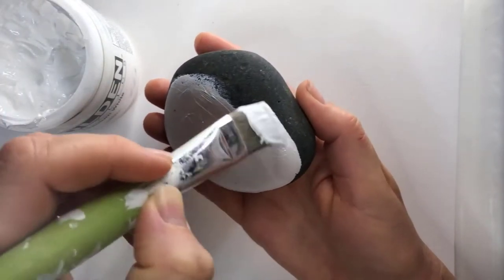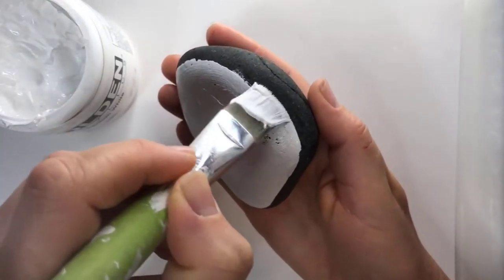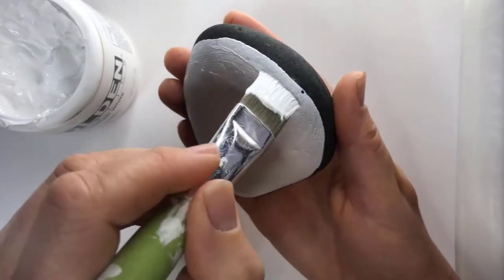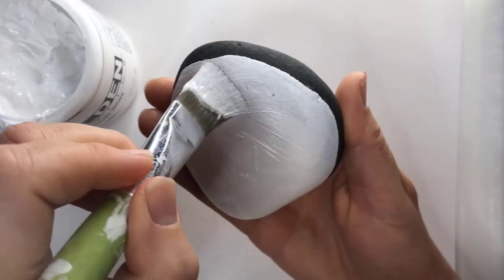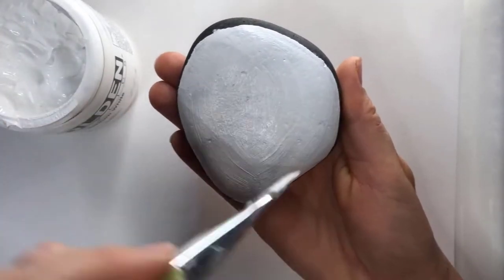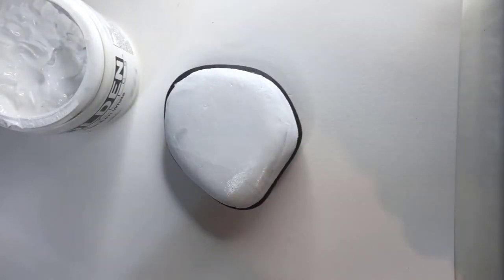Before you start applying your base coat, make sure your rock isn't hot from sitting in the sun to dry, as this makes the paint dry too quickly and will limit the amount of time you have to spread and smooth out the paint. If you're having issues with your base coat drying too quickly, you can always dip your paintbrush in some water to help rehydrate the acrylic paint. Finally, it's really important to let your base coat dry completely before moving onto the design.